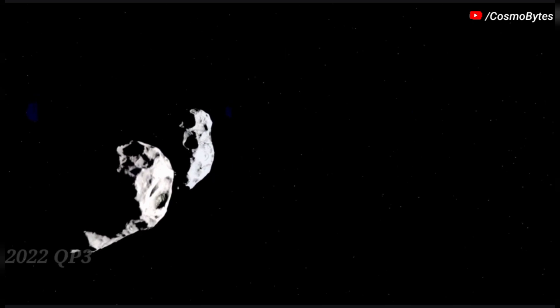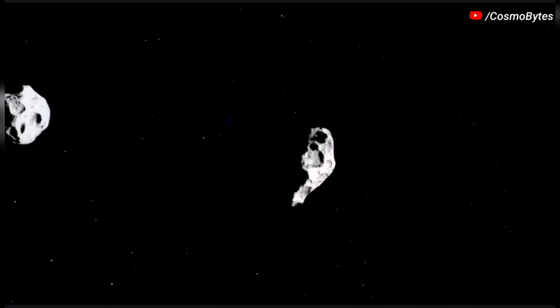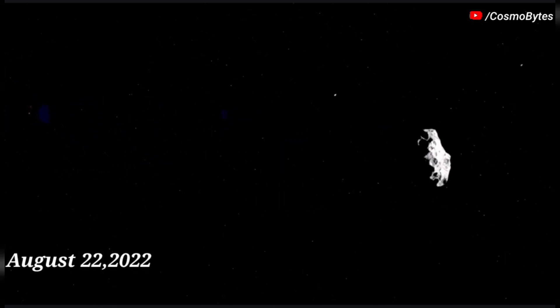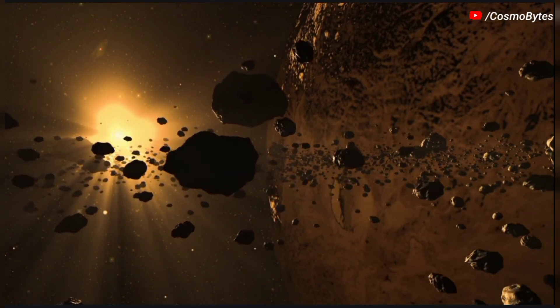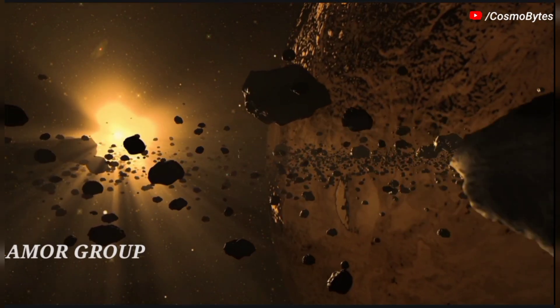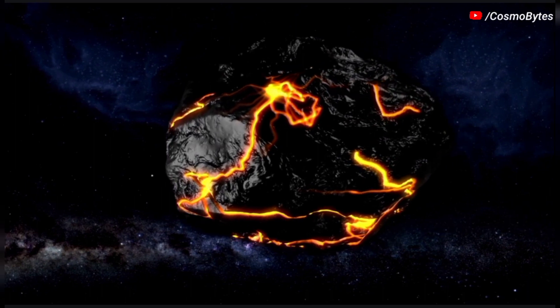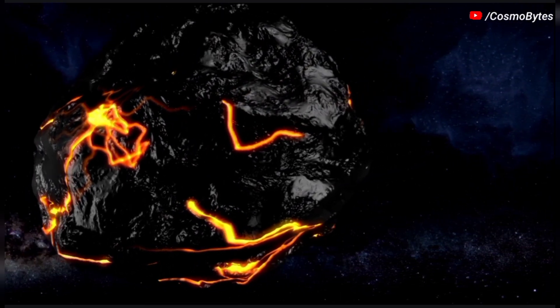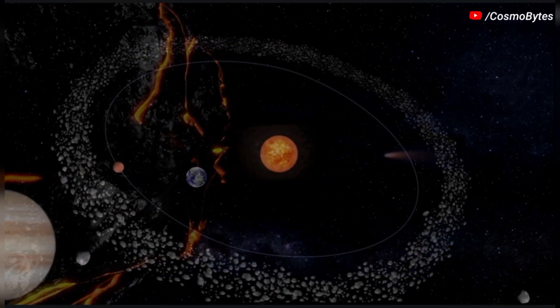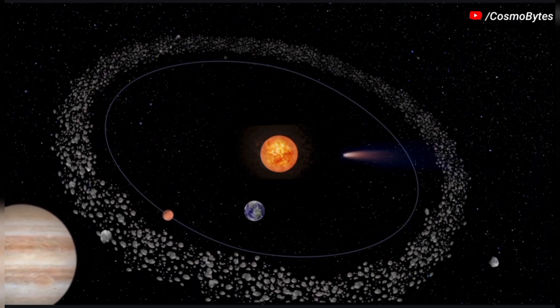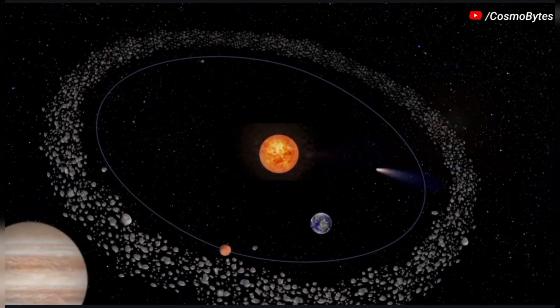The asteroid 2022 QP3 was discovered on August 22, 2022. This near-Earth object belongs to the Amor group. The size of the asteroid 2022 QP3 is 110 feet wide and it makes one orbit around the Sun in 544 days.